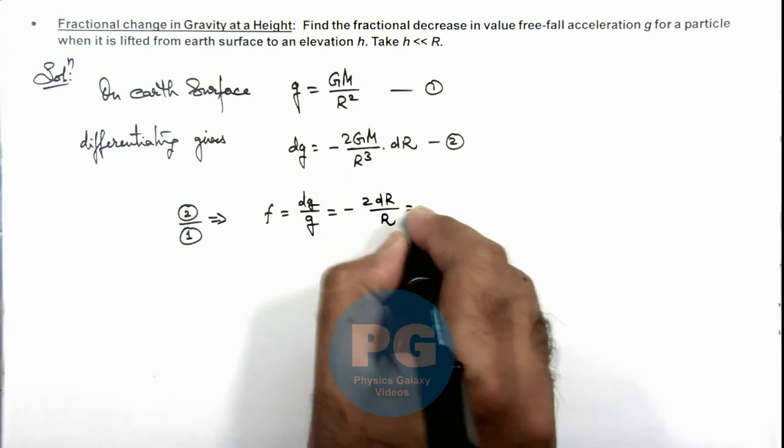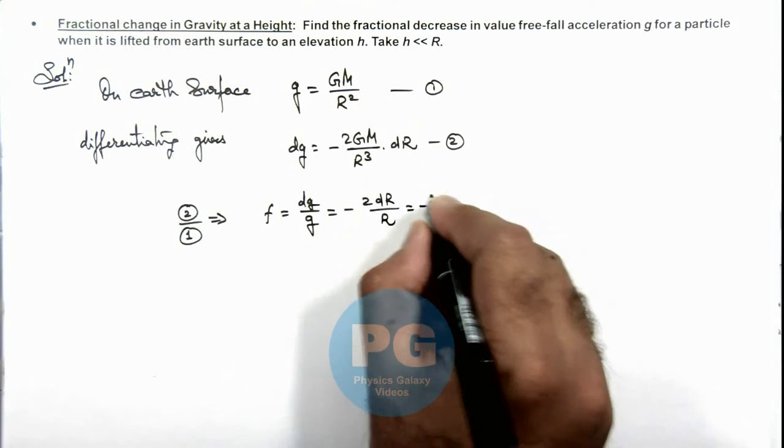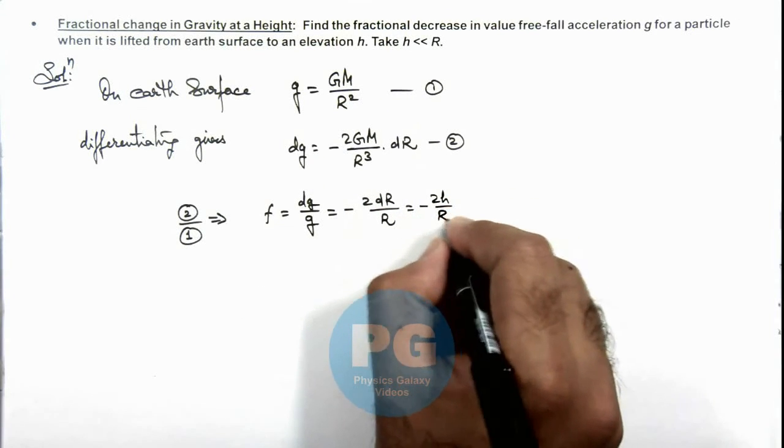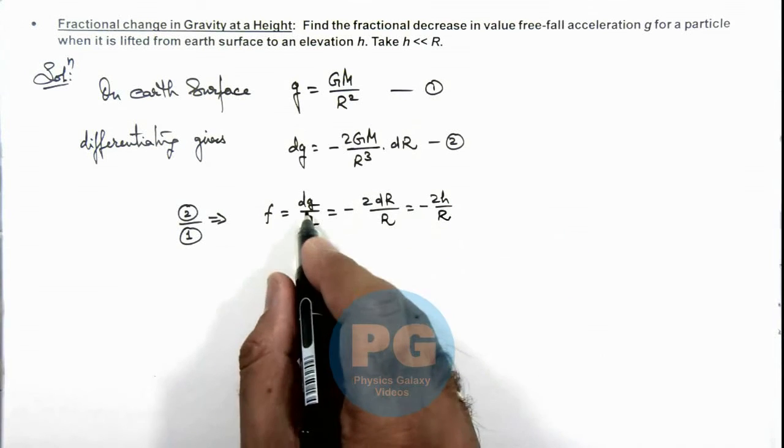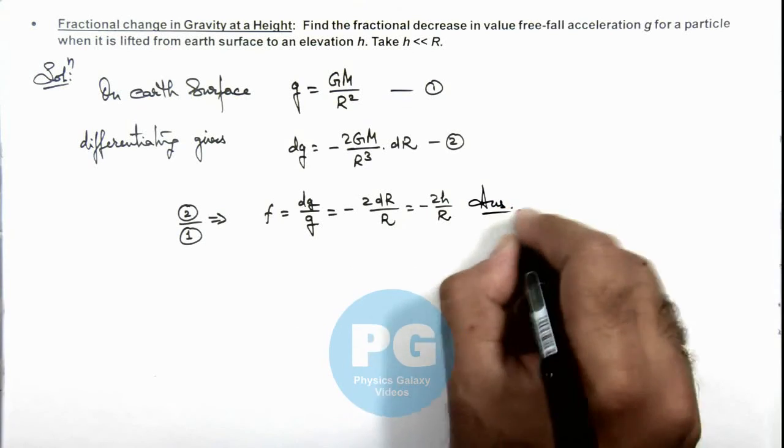So here dr which is small variation in r can be taken as h, so it is minus 2h by R. That is the fractional change in the value of acceleration due to gravity, the final result of this problem.